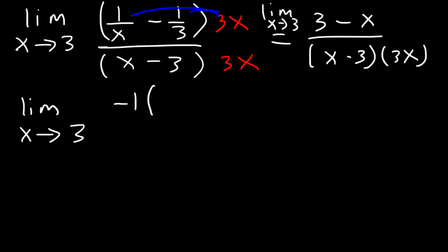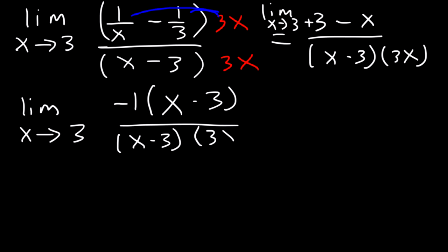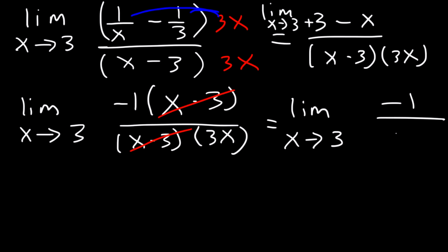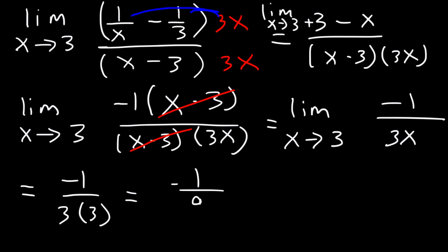If we take out negative 1 and reverse 3 and x, negative x becomes positive x and positive 3 changes to negative 3, giving us negative 1 times (x minus 3). Now we can cancel (x minus 3). We're left with the limit as x approaches 3 of negative 1 over 3x. Using direct substitution: negative 1 divided by 3 times 3 gives a final answer of negative 1 over 9.